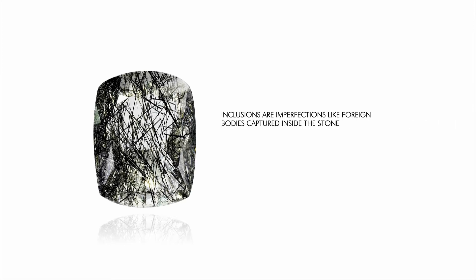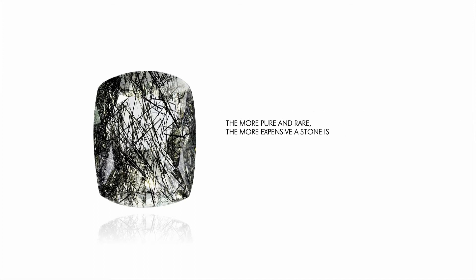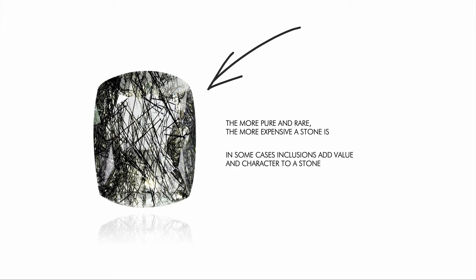Prices can vary monumentally depending on these factors. In stones there are often visible inclusions. Inclusions are imperfections, like foreign bodies captured inside a stone, which can weaken the gem's durability or affect the color, reducing the value of the stone. The more pure and rare, the more expensive a stone is. But inclusions aren't always bad — in some cases, like for rutilated quartz, they add value and character.